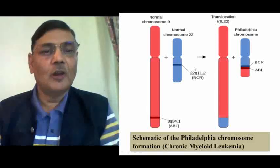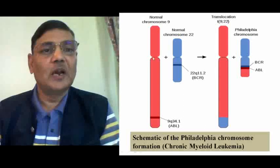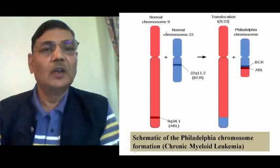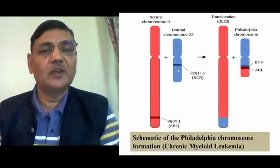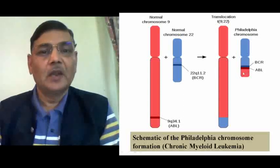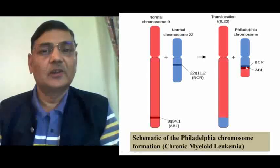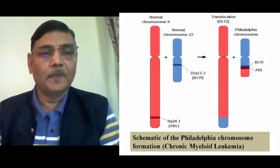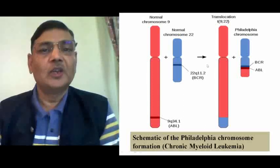In humans, another very common occurrence is the Philadelphia chromosome. Chromosome 9 and chromosome 22 are involved, and there may be an exchange of chromosome parts between them, leading to the Philadelphia chromosome. Chromosome 22 ends up carrying a translocated part of chromosome 9. Because of this translocation, two genes — BCR and ABL — come close to each other. This translocation results in a serious disease: chronic myeloid leukemia, which is a kind of blood cancer and is a very serious and fatal disease.